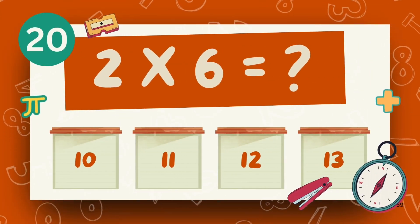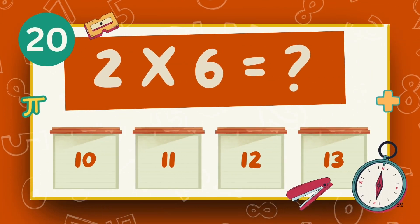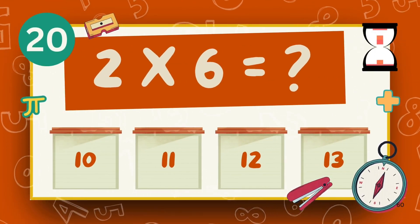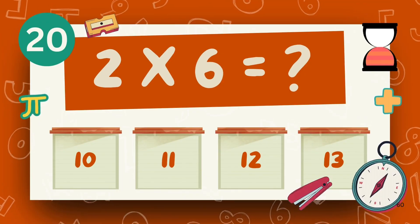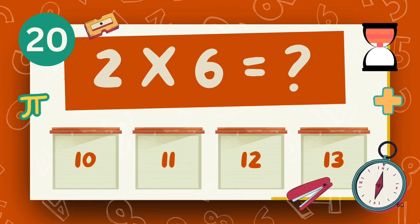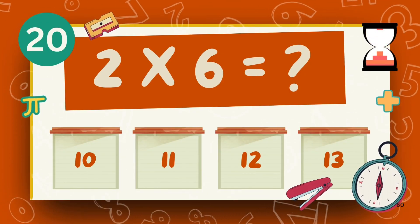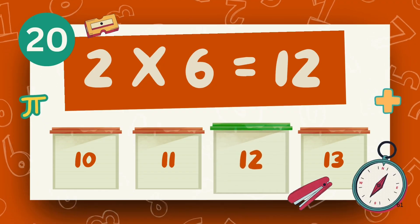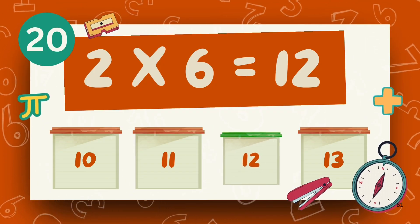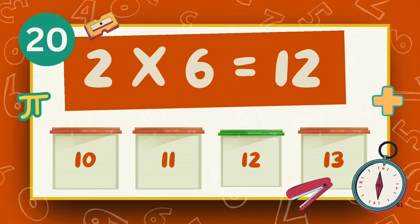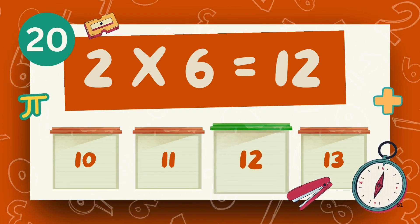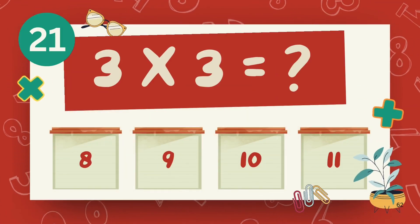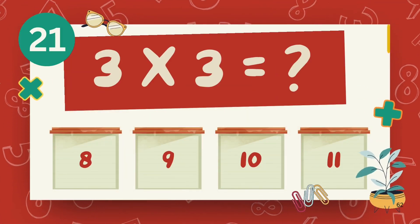What is 2 multiply 6? The answer is 12. What is 3 multiply 3?